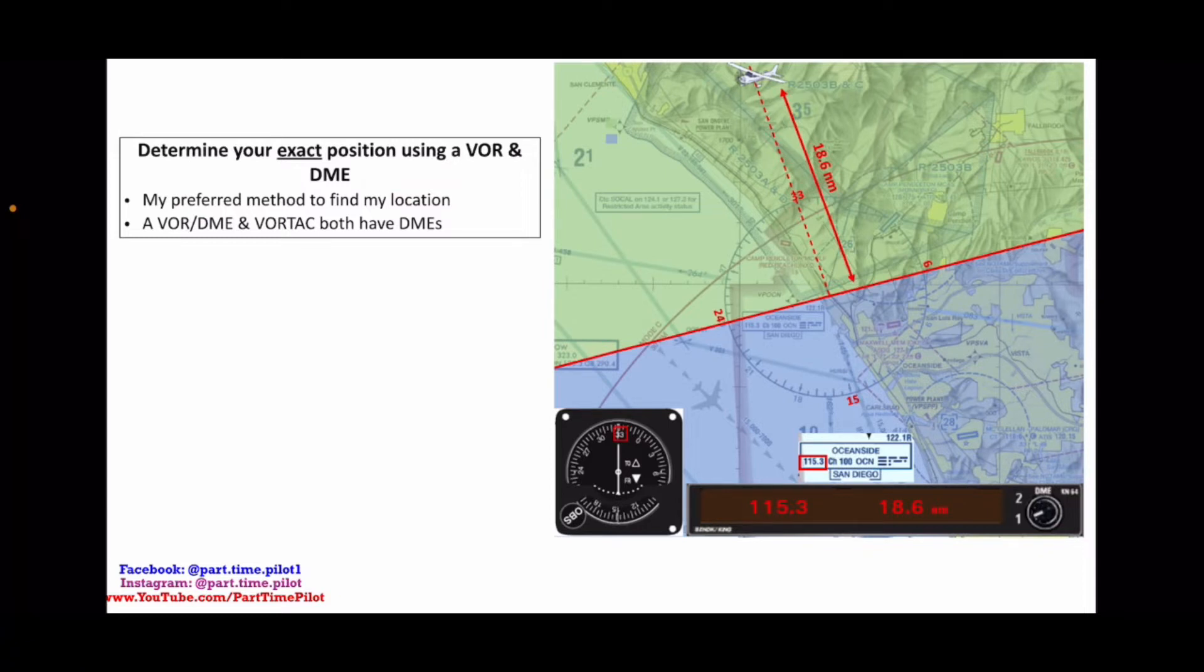You can find your exact location when you're lost with a VOR and a DME, or with two VORs, which we showed in our last video. You can check that out by clicking in the top right. If you have two working VORs, you can find your exact location, and if you have a VOR with a DME, you can also find your exact location because it gives you that distance information.